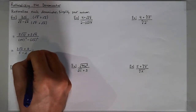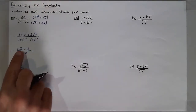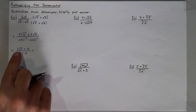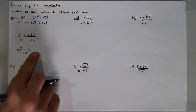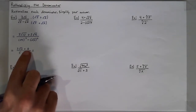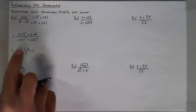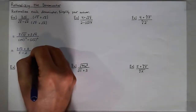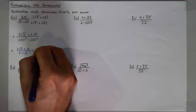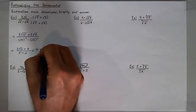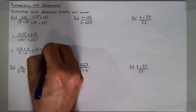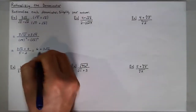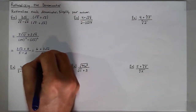Now typically, when you have radicals, you want to put them after the whole numbers. So this can be rewritten as 6 plus 3 square roots of 10, over 3.